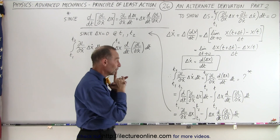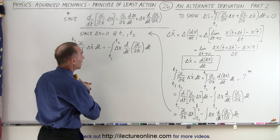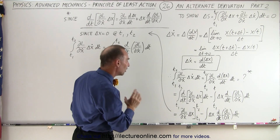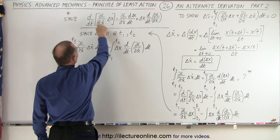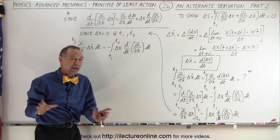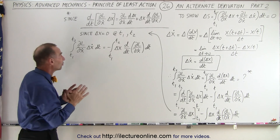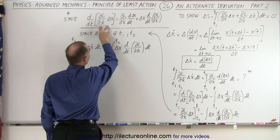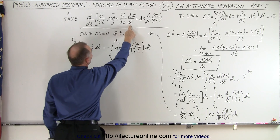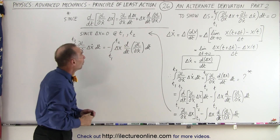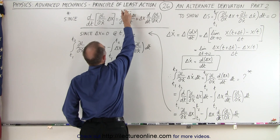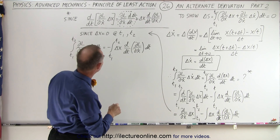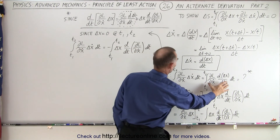Now, what is that integral equal to? We have (∂L/∂ẋ) times δx, and we take the d/dt of that. Essentially, we're taking the derivative of this particular expression. You may ask why — hang with us and we'll see in a moment. We're taking the derivative of a product, so by the product rule: the first times the derivative of the second, plus the second times the derivative of the first. When you look at this portion right here — does it look familiar? It is indeed this expression right here.